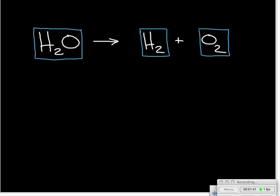The purpose of the box is to say we are not going to change anything inside those boxes in order to get this to balance. The only thing we're going to do is put coefficients — the big numbers — in front of each of those boxes to tell us how many molecules of each substance we have.